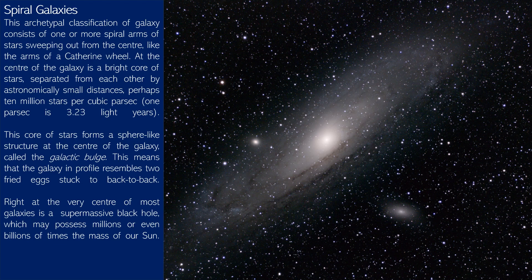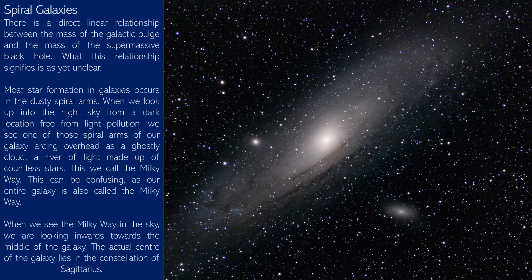This means that the galaxy in profile resembles two fried eggs stuck back to back. Right at the very centre of most galaxies is a supermassive black hole, which may possess millions or even billions of times the mass of our sun. There is a direct linear relationship between the mass of the galactic bulge and the mass of the supermassive black hole, but what this relationship signifies is yet unclear.